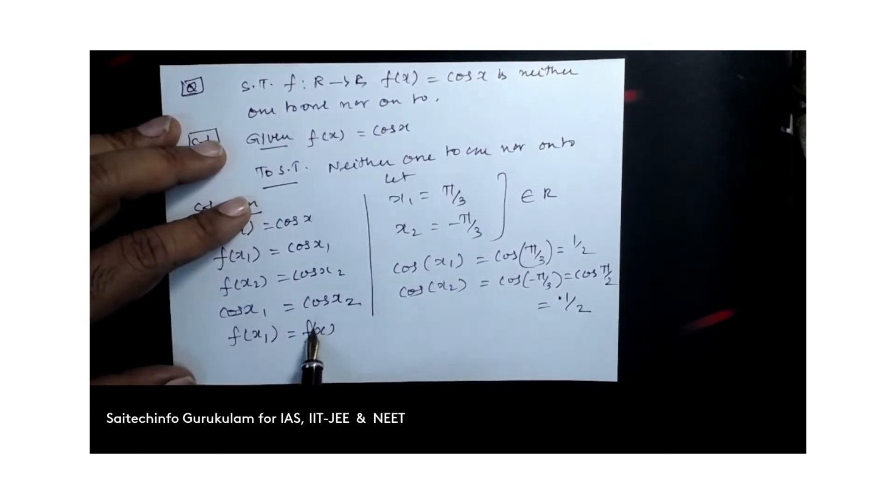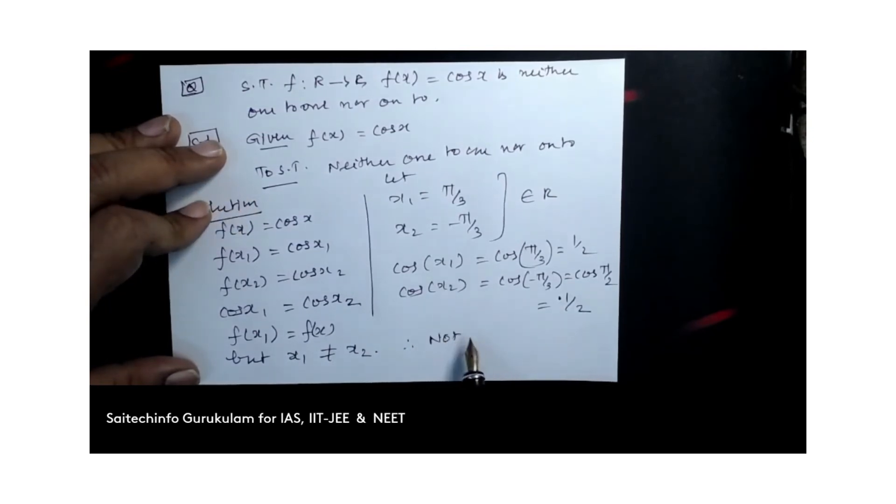So f of x1 equals f of x2, but x1 is not equal to x2. Therefore, it is not one-to-one function.